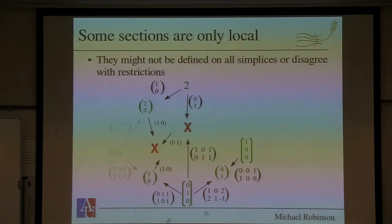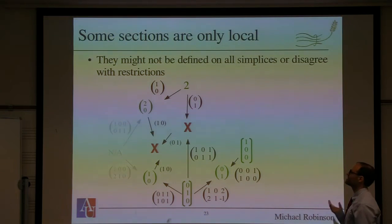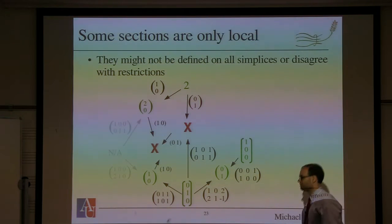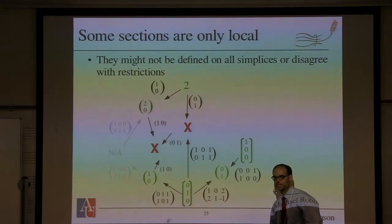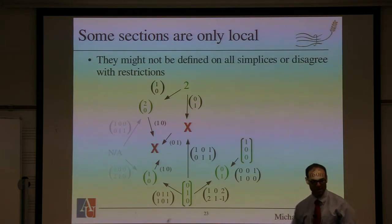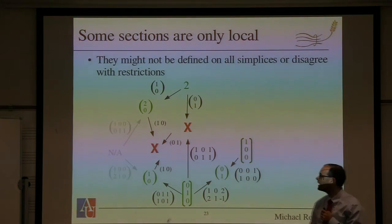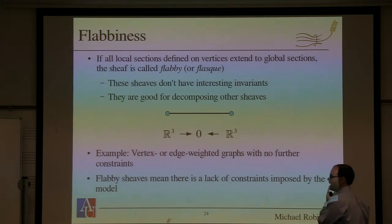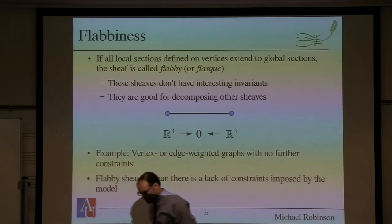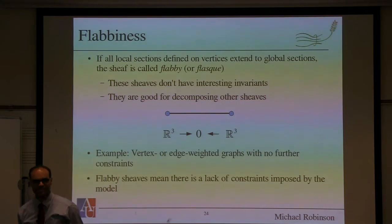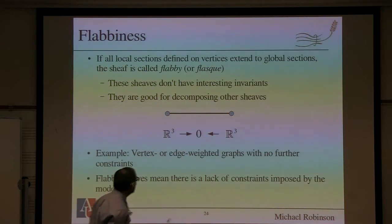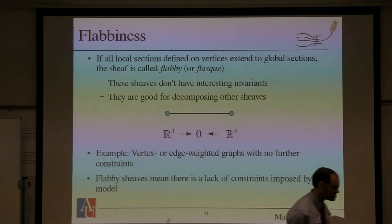This construction allows me to talk about consistency in a useful way. Global sections are the information that's gotten fused. When I ask about the space of global sections, and my sheaf started out as a sheaf of vector spaces, the space of global sections is — guess what — a vector space. I can add sections and it won't change whether or not they match up. Now, lots of sheaves have lots of global sections. Some of the less interesting ones — from a data science standpoint — are called flabby sheaves. These are ones for which the consistency condition is not very useful.